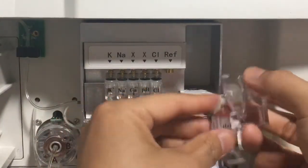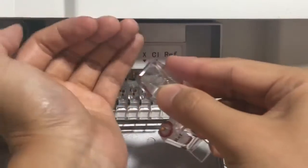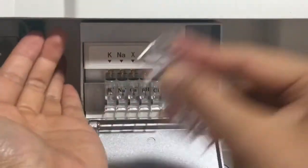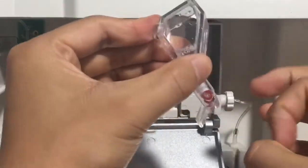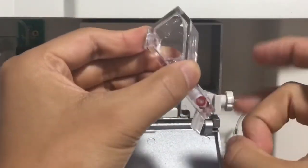For the reference electrode, we need to hold like this and use our palm to hit like this. Then still use the finger to flip the bottom.